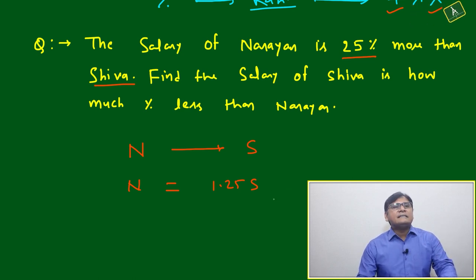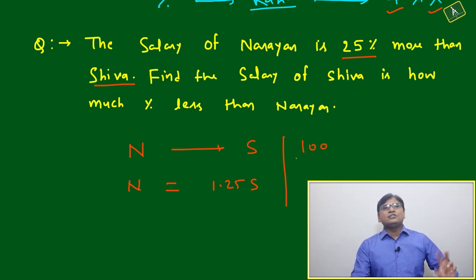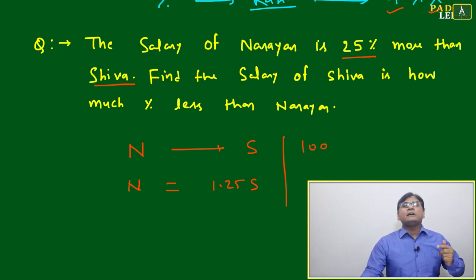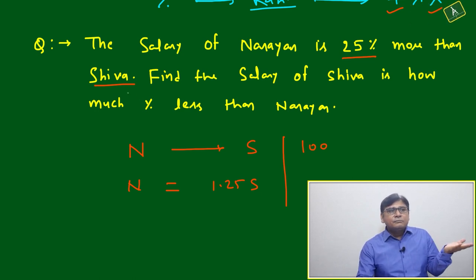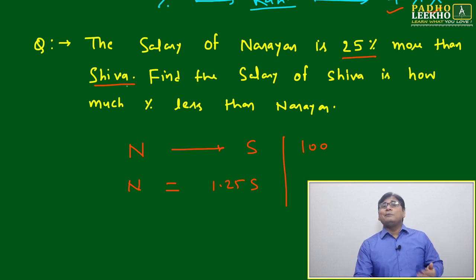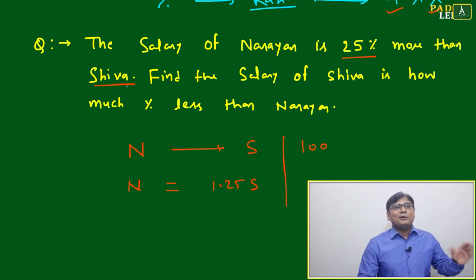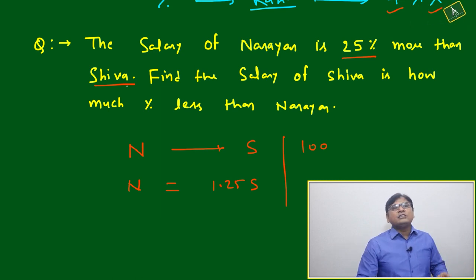We need to find how much percentage less Shiva's salary is than Narayan's. The base is not given — only the percentage change is given. We don't know the exact salary of Shiva or Narayan. It may be one lakh, two lakh, or ten thousand.